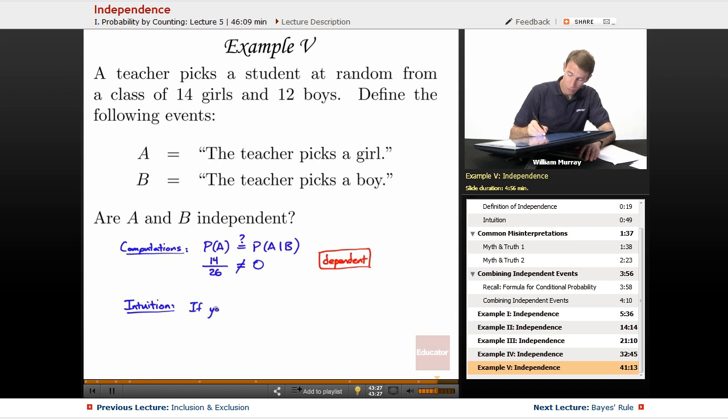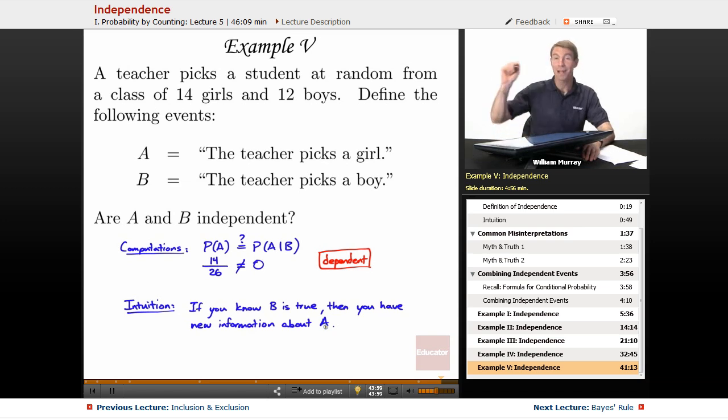if you know that B is true, if you know B is true, in other words, if you know that the teacher picked a boy, then you have some new information about whether A might be true. You have very strong new information about whether A might be true, because if you know that the teacher picked a boy, then you know for sure that the teacher did not pick a girl. So you've got some new information about whether the teacher might have picked a girl. Well, the information is that that did not happen.